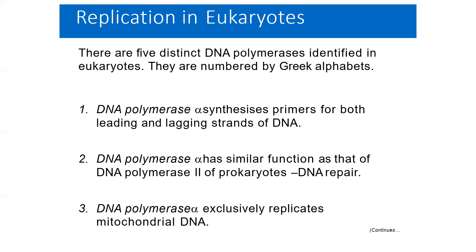Number four is DNA polymerase delta, which is analogous to DNA polymerase 3 of prokaryotes. It takes part in the synthesis of both the leading and lagging strands with an intrinsic proofreading activity. Number five is DNA polymerase epsilon, comparable in its action to the prokaryotic DNA polymerase 1. It is involved in the removal of the RNA primer of the Okazaki fragment on the lagging strand.